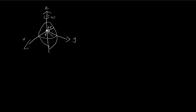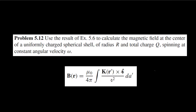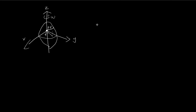In this problem, we're told to find the magnetic field at the center of a rotating sphere. We're told to use the result of example 5.6, which is about the magnetic field at a point above the center of a circular hoop with current going around it. But instead of using this result, I'm going to use the formula for the magnetic field arising from surface current. I think using this formula is a bit more rigorous and enlightening.